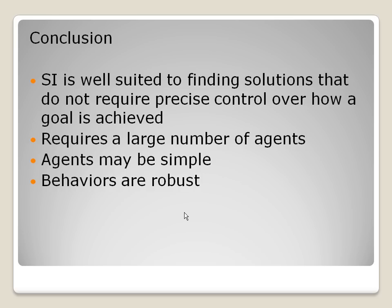Now we will move on to the conclusion. In conclusion, swarm intelligence is very suited to finding solutions that do not require precise control over how a goal is achieved. By the way, it requires a large number of agents. And these agents may be simple and behaviors are robust.